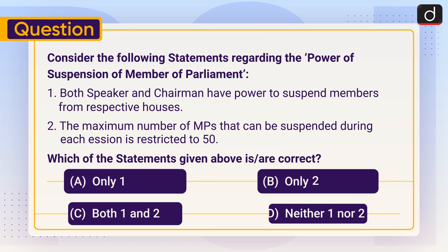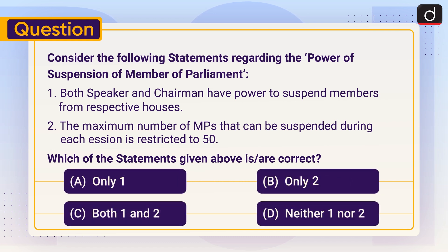Now it's time for the practice question. Consider the following statements regarding the power of suspension of a member of parliament: (1) Both the Speaker and Chairman have power to suspend members from their respective houses. (2) The maximum number of MPs that can be suspended during each session is restricted to 50. Which of the statements is/are correct? Only one, only two, both one and two, or neither one nor two? Send your answer in the comment section. Stay tuned for the next episode — thanks for watching, have a great day!